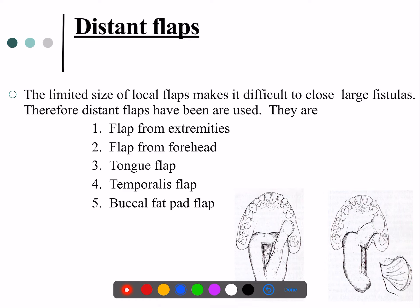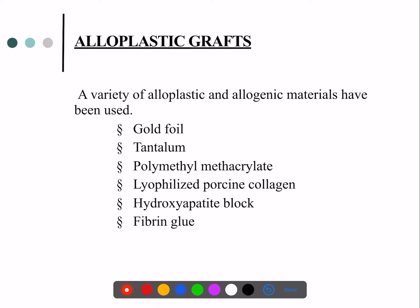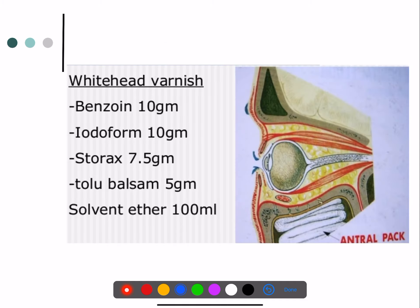The limited size of local flaps makes it difficult to close larger fistulas, so distant flaps are used — flaps taken from the forehead, tongue, temporalis, buccal fat pad, or extremities. If a distant flap is not feasible, alloplastic grafts can be used: gold foil, titanium foil, polymethyl methacrylate (acrylic plug), collagen, hydroxyapatite block, or fibrin glue.